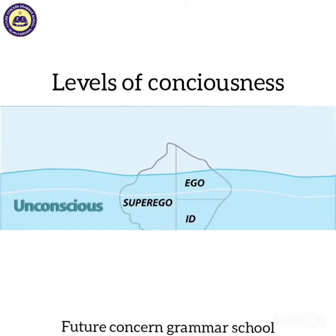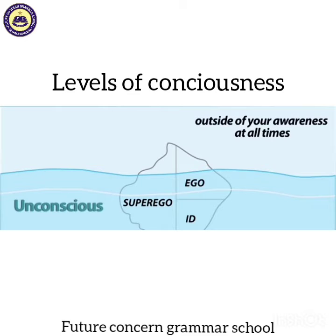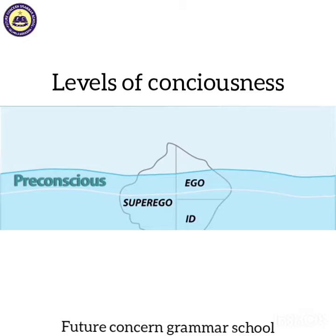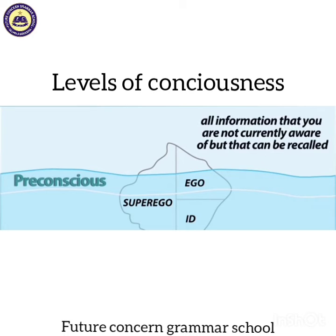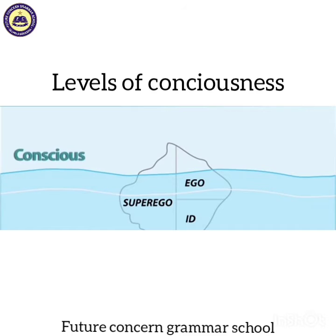First is the unconscious mind — yeh hamari awareness sے bahar exist karta hai. Second is the pre-conscious — isme woh tamam information hoti hai jisے hum currently aware nahin hotay. Third is the conscious mind — it is your current state of awareness.